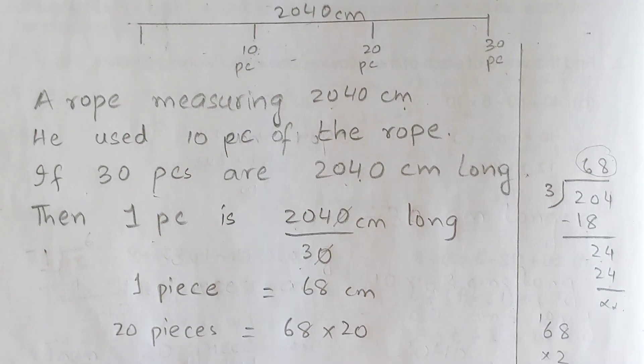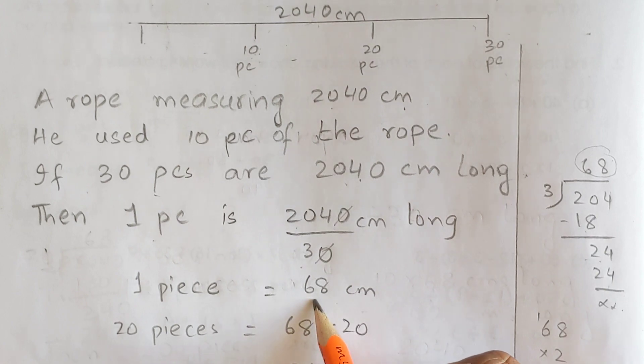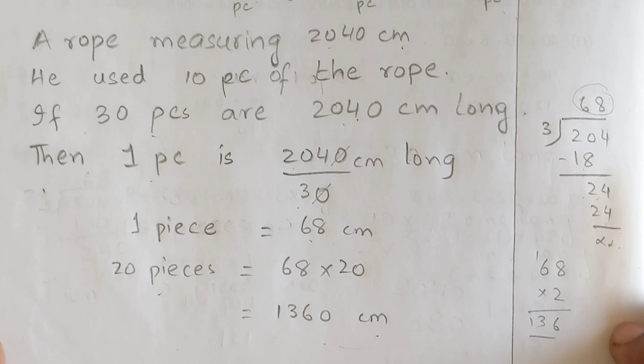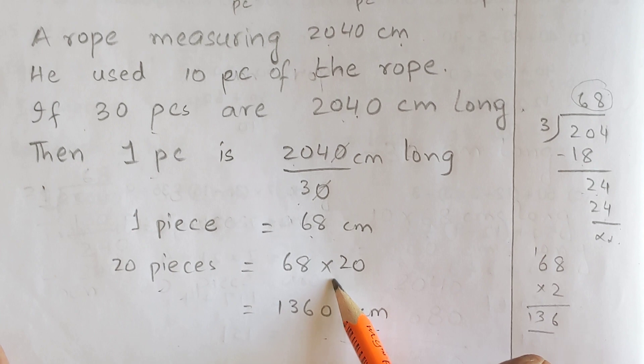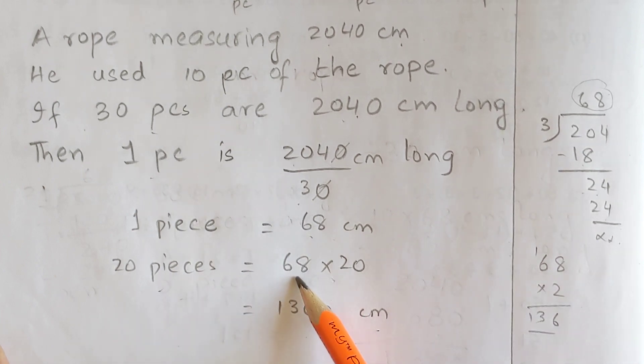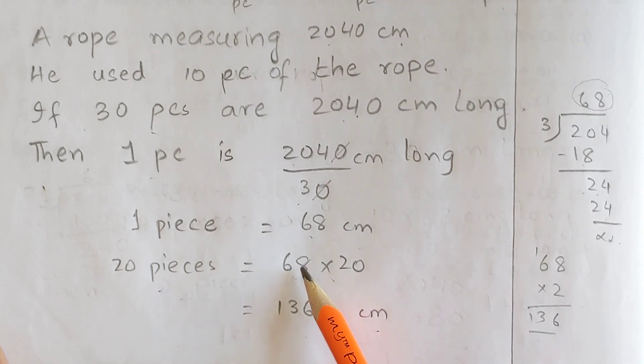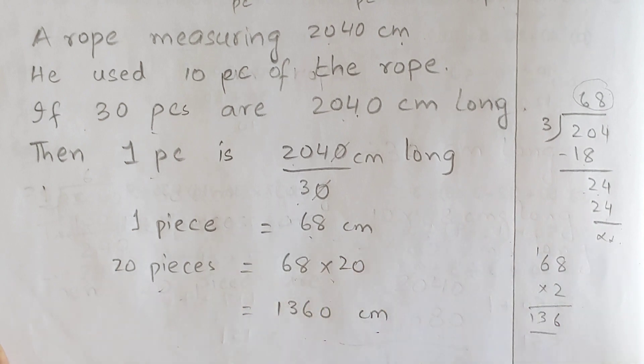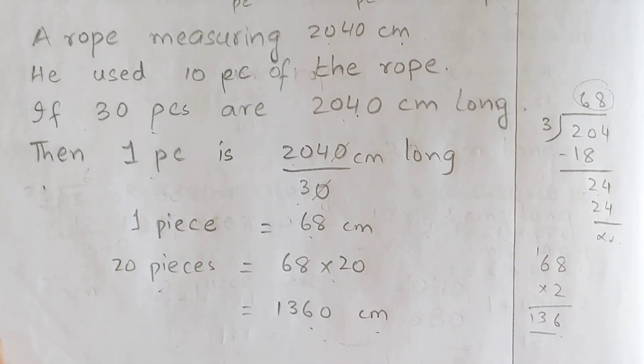Okay students, when we know 1 piece, then we can find 20 pieces. We multiply 68 by 20. In multiplication, it's easy to split - split 20 into 10 times 2. So 68 times 10 is 680. Multiply by 2, or we can do 68 times 2 which is 136, then multiply by 10. Either way, the answer is 1360 cm. So this length is the length of 20 pieces that he used.